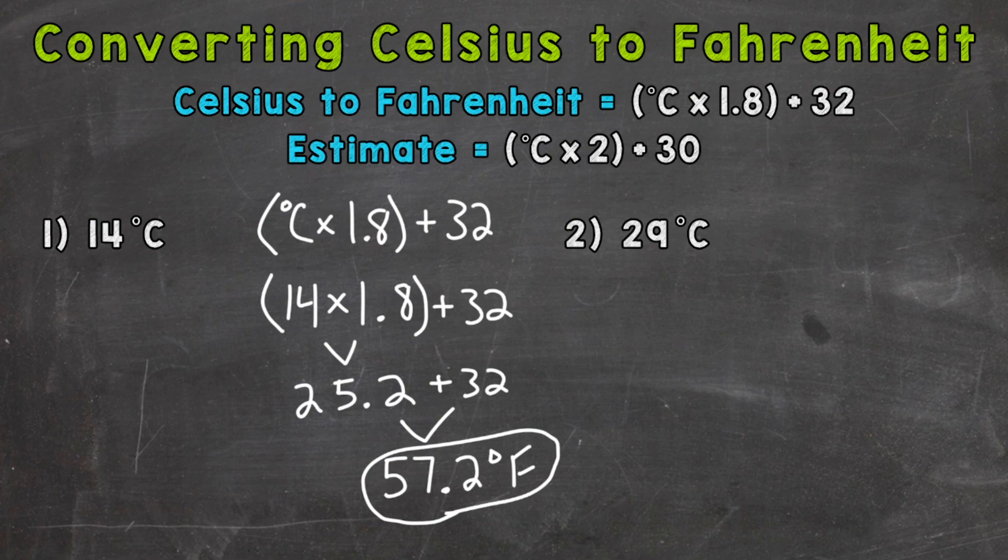Now, as far as estimation, we can use degrees Celsius times 2 plus 30. I rounded the numbers in the original formula to simpler numbers to work with for mental math and coming up with an approximate or close conversion.